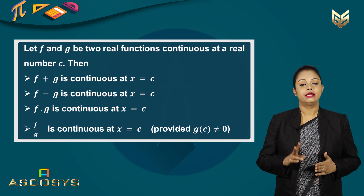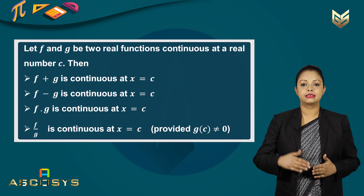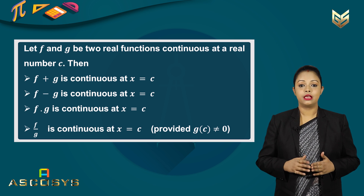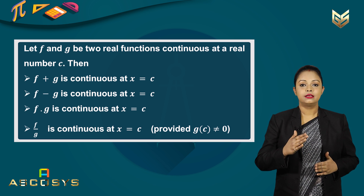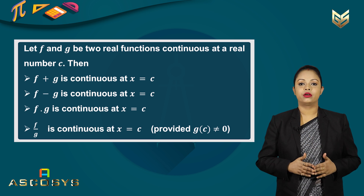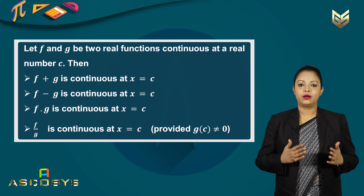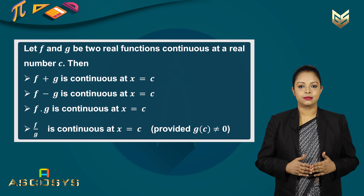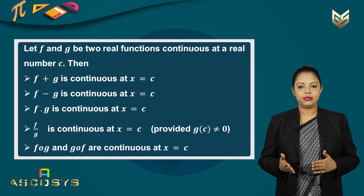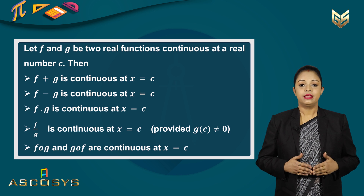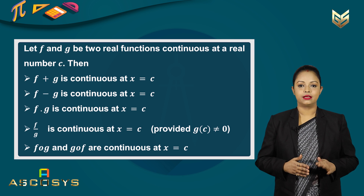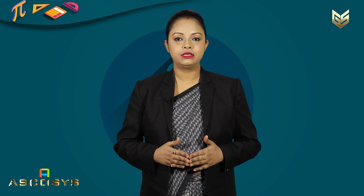Next, the division of two continuous functions — f divided by g — is also continuous at x equal to c, provided the denominator is not equal to zero. That means the function g at the point c must not be equal to zero, otherwise our function will not be defined. Next, we have composition of two continuous functions, that means f of g and g of f — they are also continuous at x equal to c. So these are all the algebra of continuous functions.